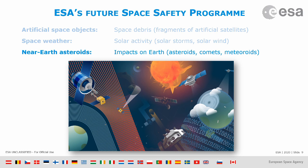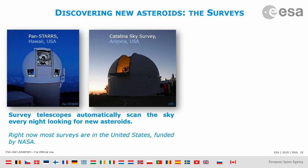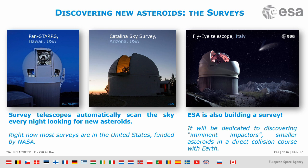The first step to do something about asteroids is to know they exist — to discover them. The discovery of new asteroids is done today with what we call survey telescopes. They are mostly automated telescopes that, every night, scan the sky, take pictures, and look for anything that moves. Right now most of them are in the United States, but ESA is building its own. It will be installed in southern Italy and Sicily, hopefully in one or two years, and it will be the European contribution to discovering new asteroids coming towards us.